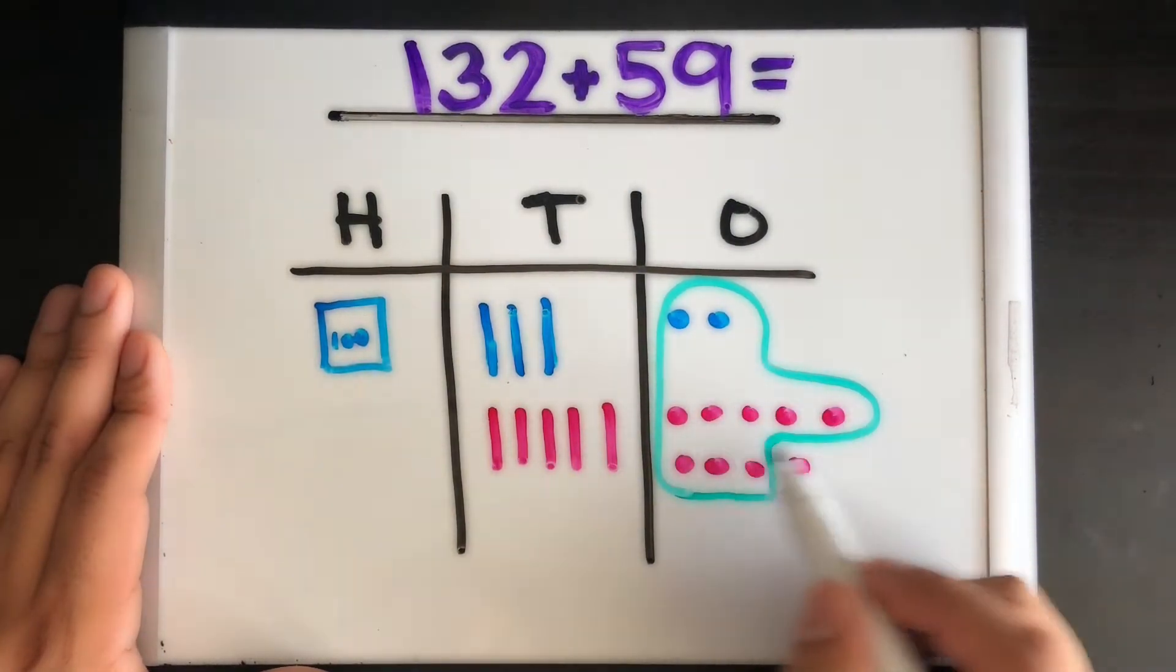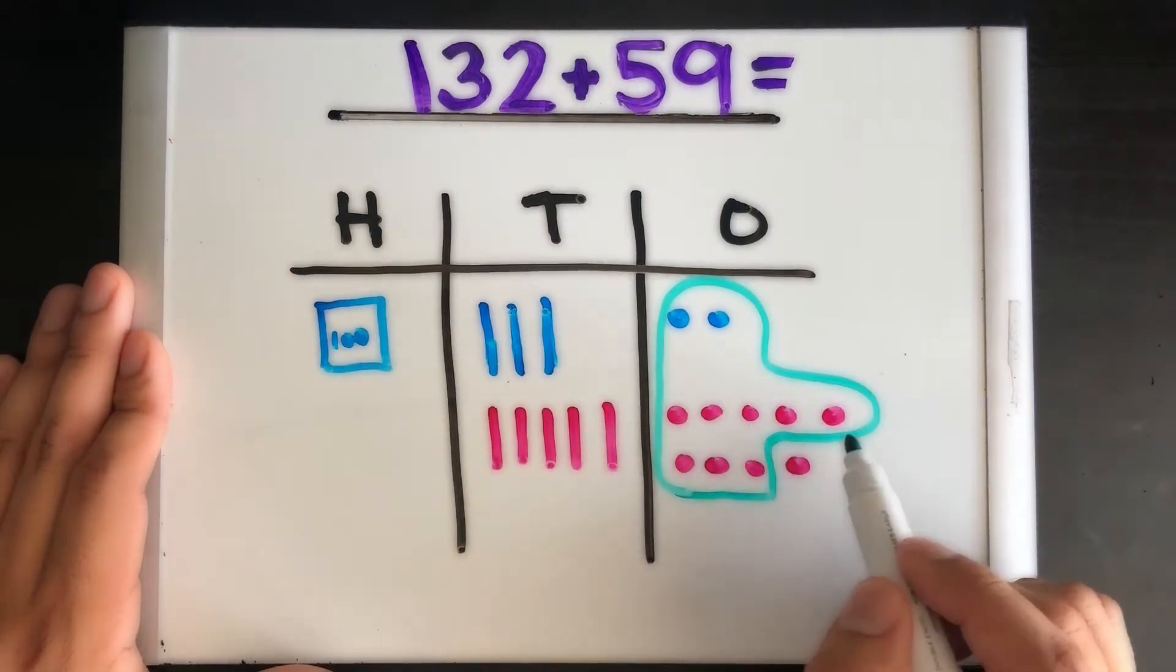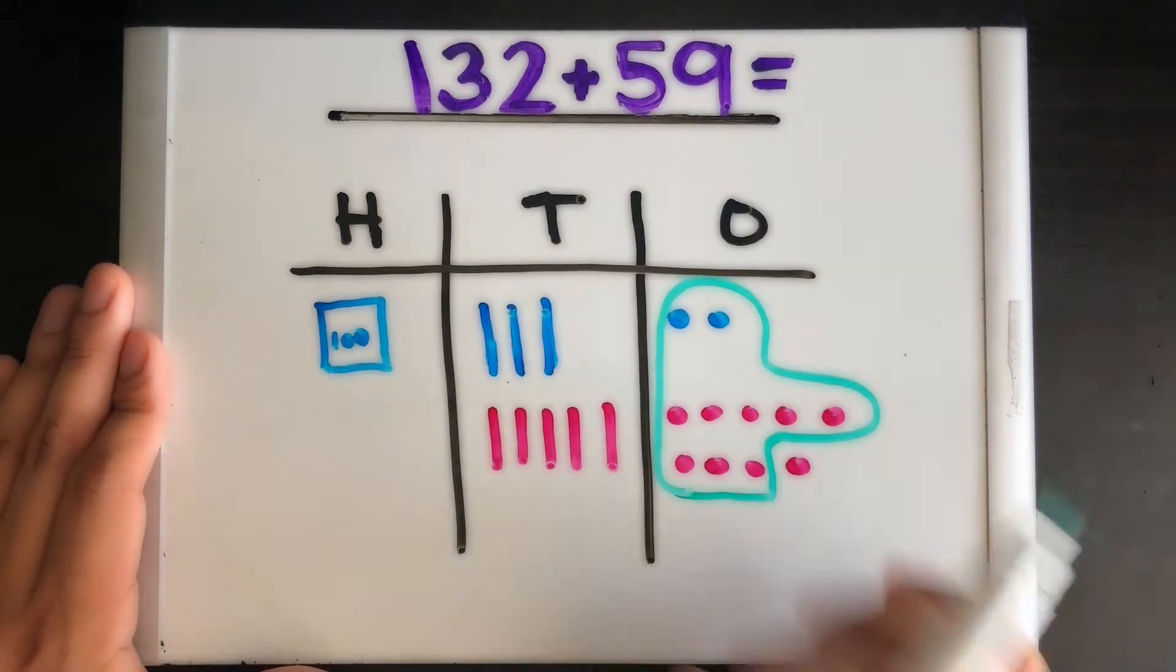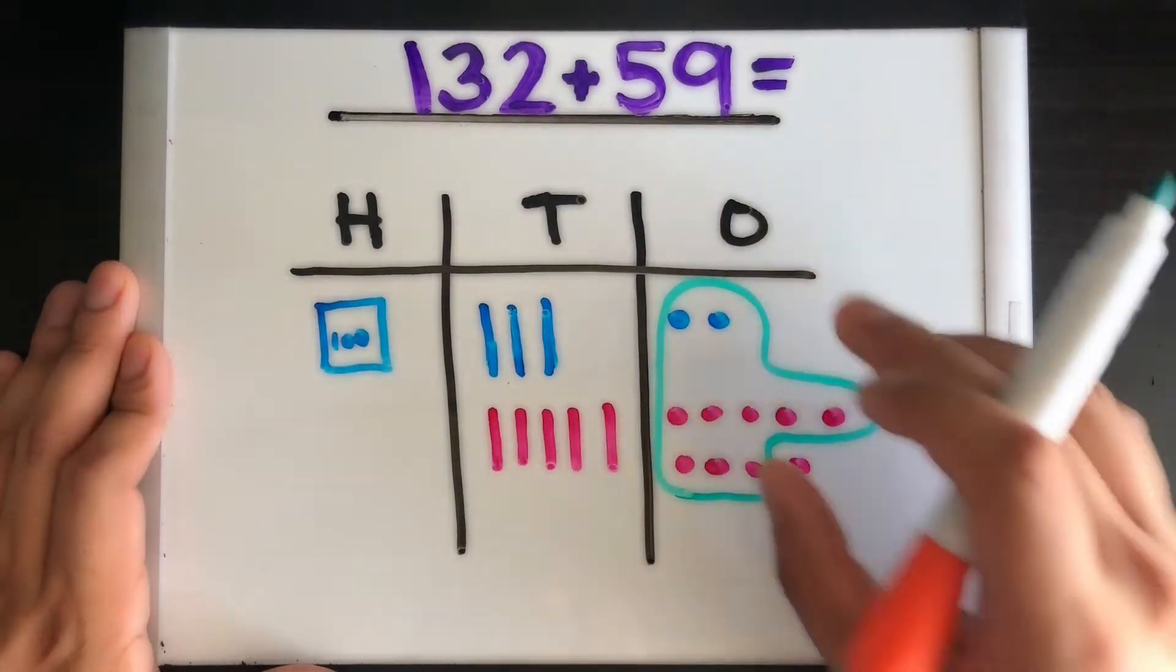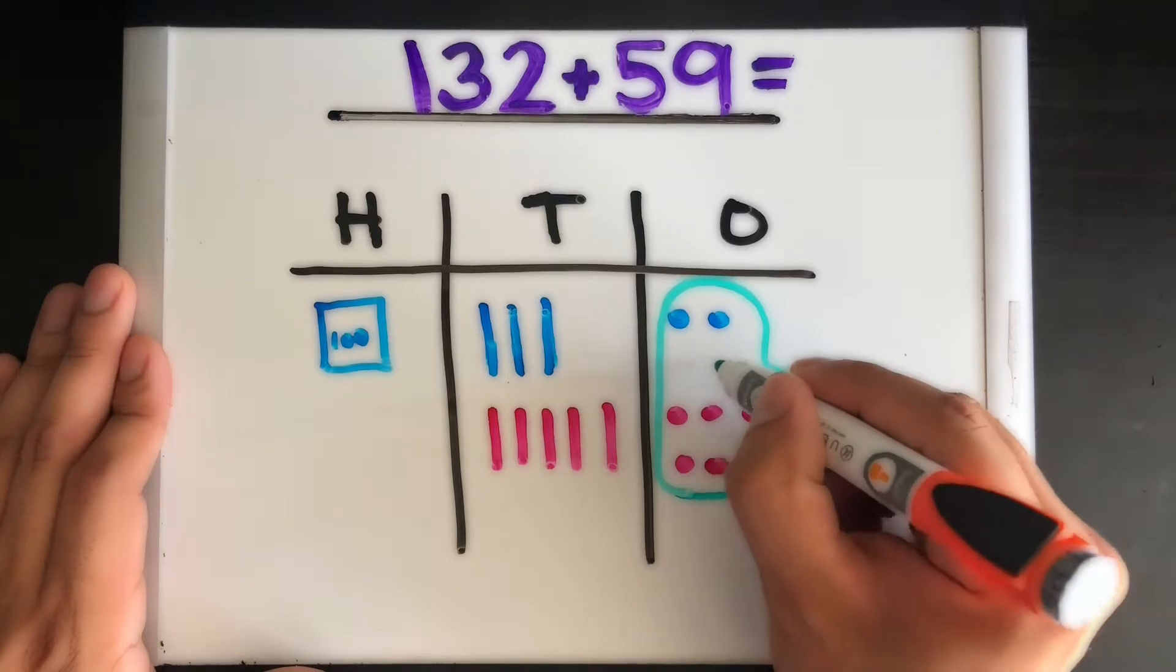Okay, so we have our group of 10. These guys, they don't want to stay like that anymore—they want to transform. Okay, they want to go into their new evolved form, just like a caterpillar wants to transform to a butterfly. This wants to transform to a ten, so let's let them transform.